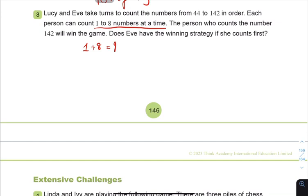And from 44 to 142, how many numbers are there? There should be 142, take away 44, adding 1. Because if you are just purely doing the subtraction, that's going to be the number of gaps between them. But because it is inclusive, including the first one and the last one, so we need to add 1 to it. And that is going to be 99.